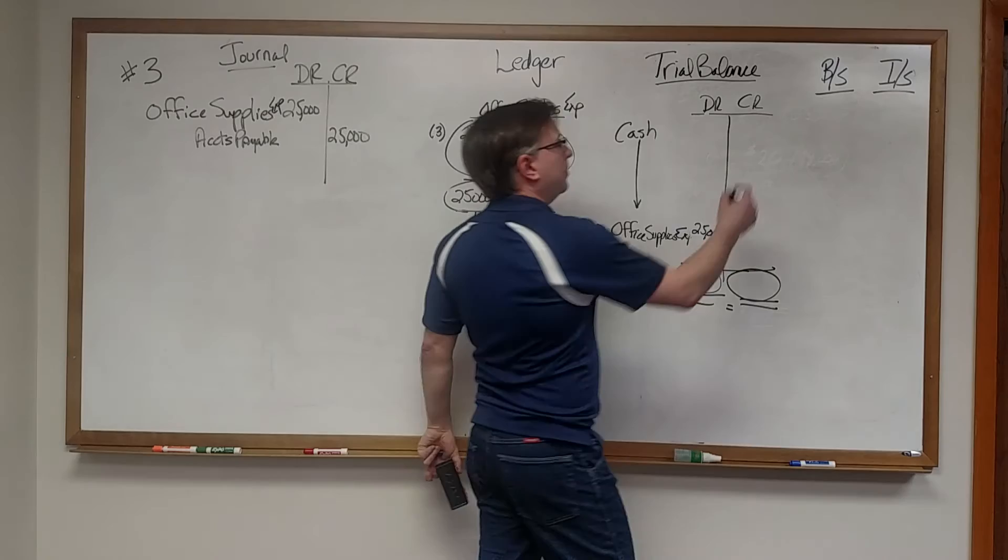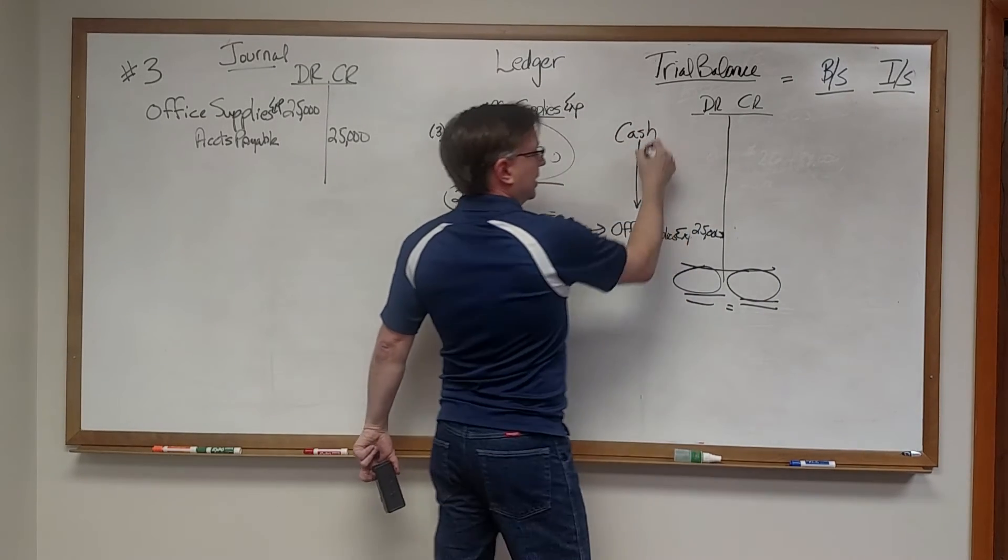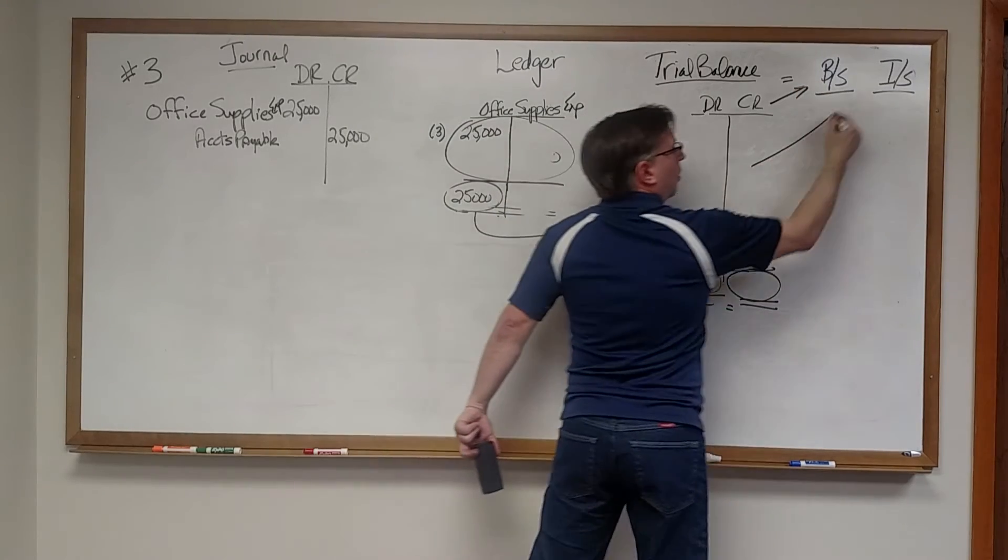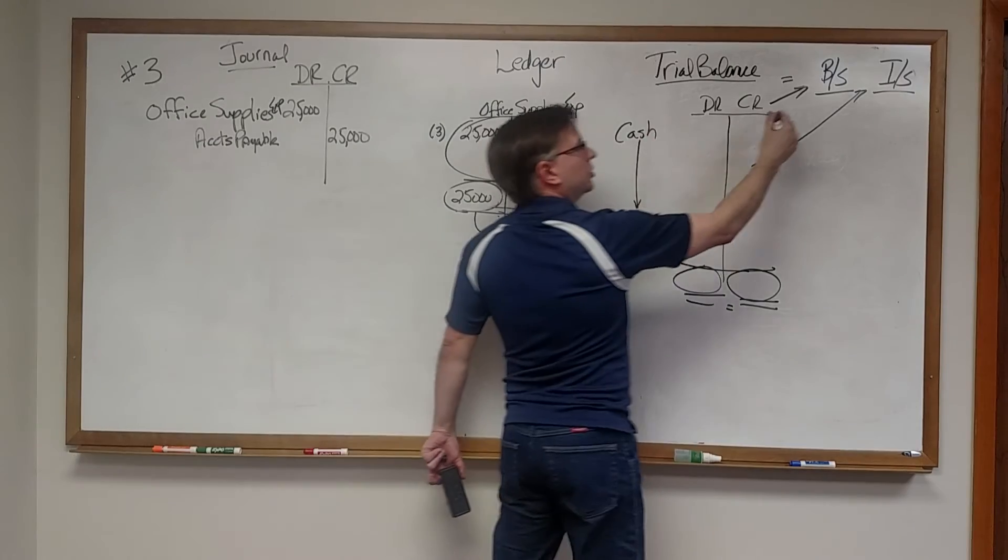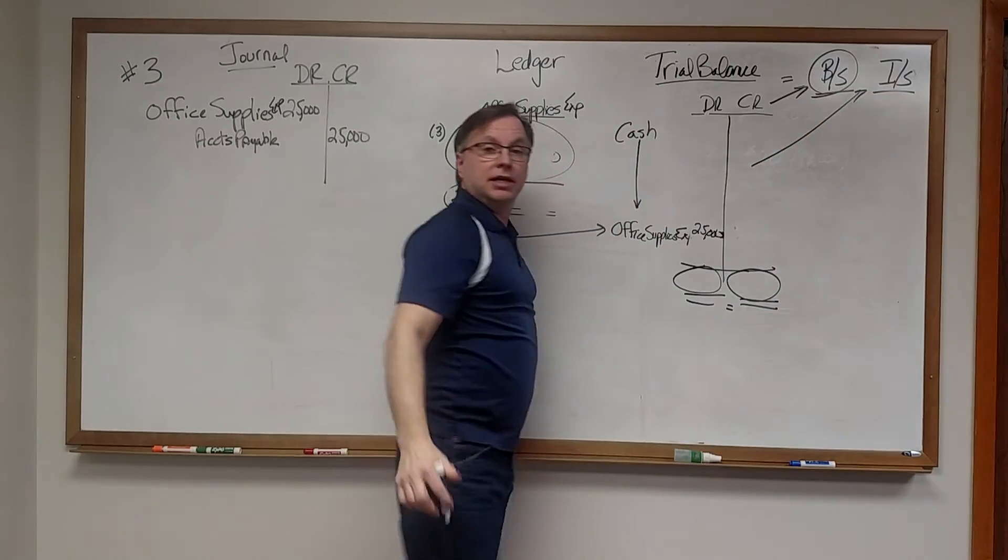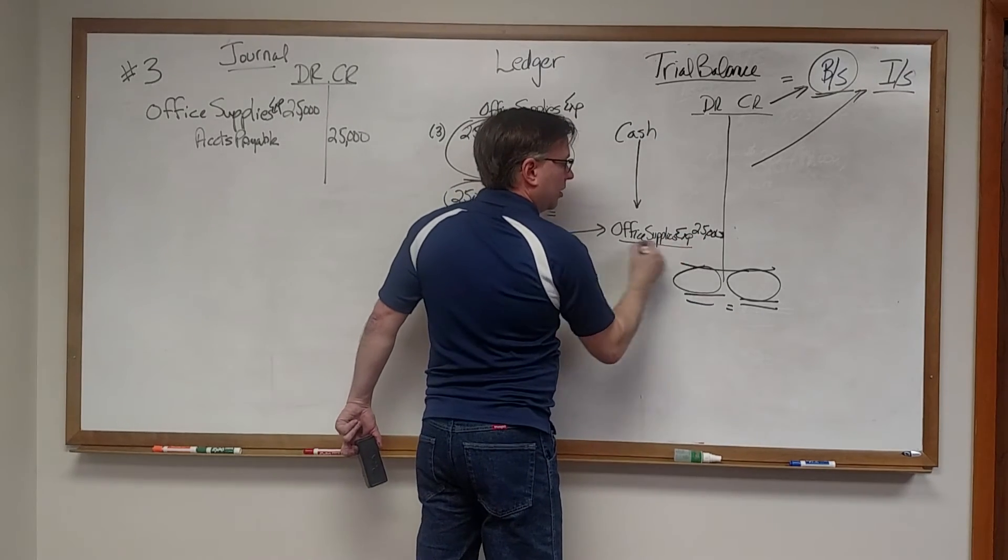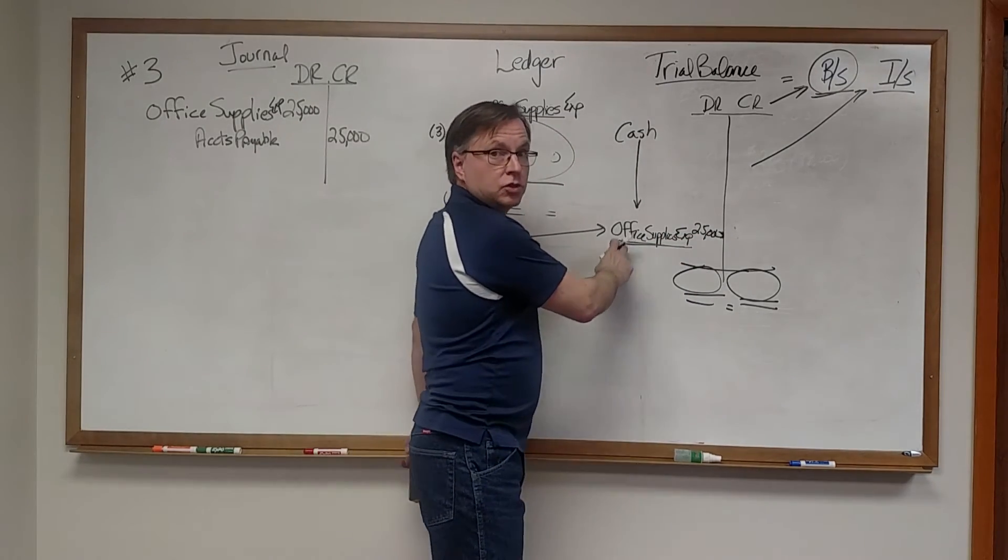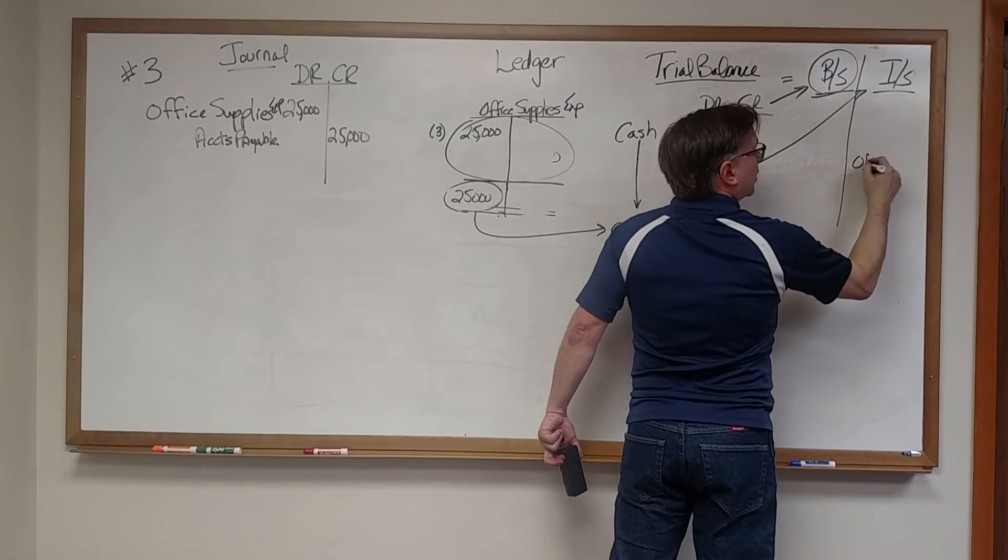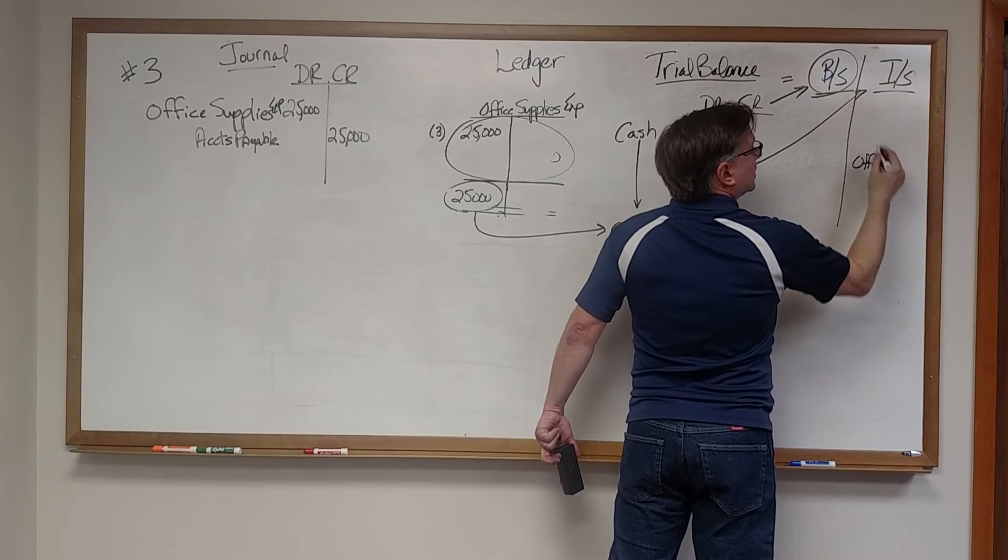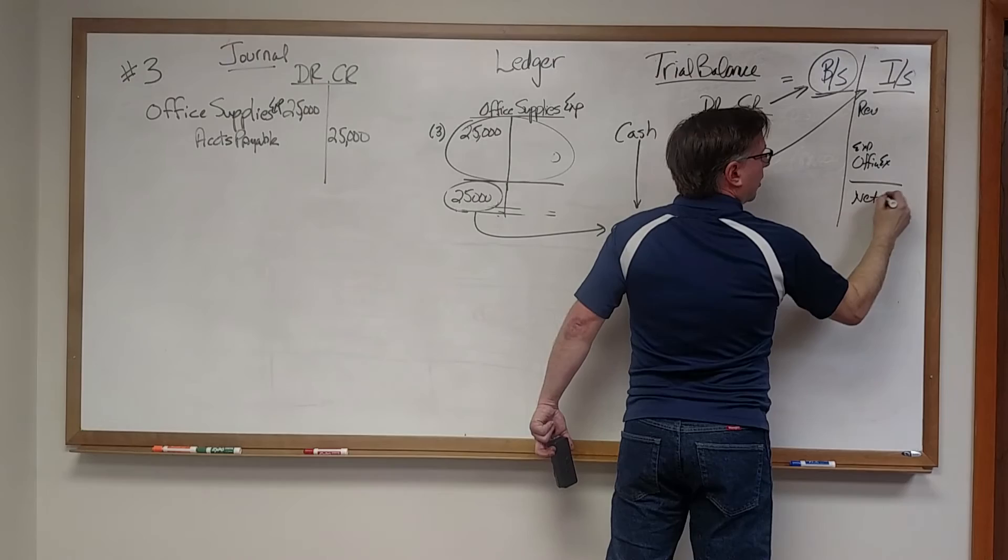Finally, the last step of the exam before ratios is posting all of these to either a balance sheet or an income statement. For example, cash would go to our balance sheet because it's an asset. We remember that from the beginning. But in our example here, office supplies expense was an income statement item. So it will go on our income statement as an expense. Revenues less expenses equals our net income.